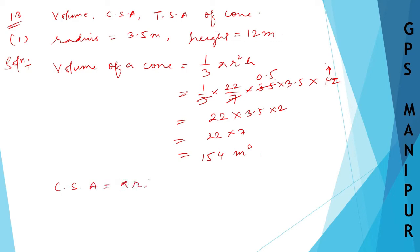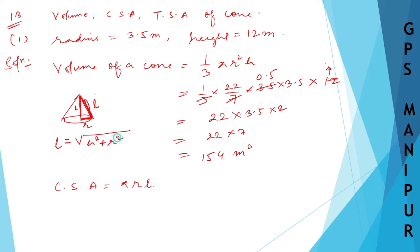Now we need to find the curved surface area. The formula for curved surface area of a cone is π × r × l. Here l is the slant height. If you draw the cone, the height goes vertically, the radius is the base, and l is the slant height from apex to base edge. We find l using Pythagoras theorem: l = √(h² + r²).